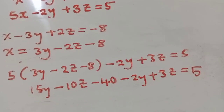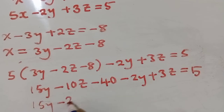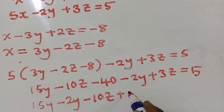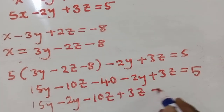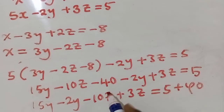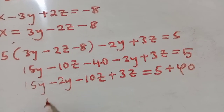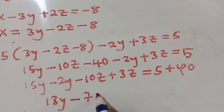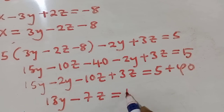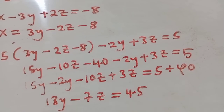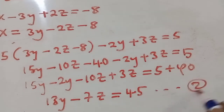Now we group the like terms: 15y minus 2y, and minus 10z plus 3z, equals 5 plus 40 — because the 40 crosses the equal sign. So we have 13y minus 7z equals 45. This is Equation 2.